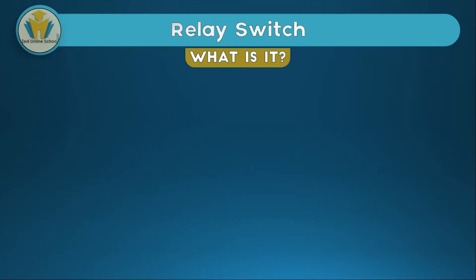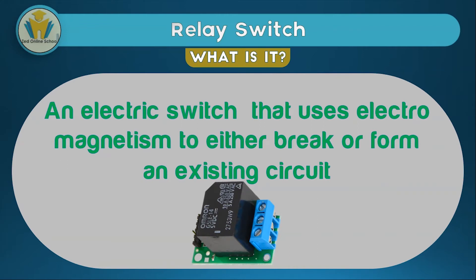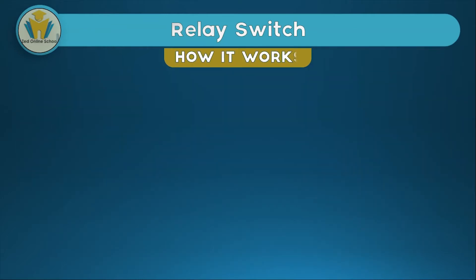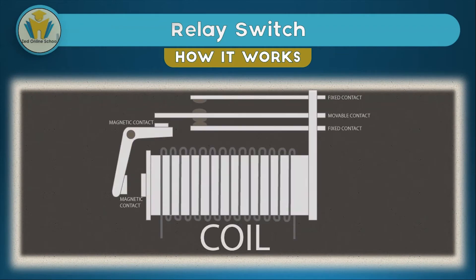What is a relay switch? A relay switch is an electric switch that uses electromagnetism to either break or form an existing circuit. The picture here shows an example of how a relay switch looks in real life. Since we're talking about the applications of magnetism, we know magnets will be used. In this definition we have the word electromagnetism — electromagnetism is simply the use of electricity to bring about magnetism.